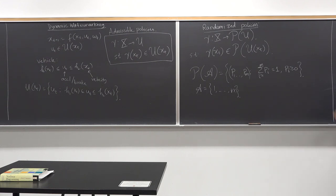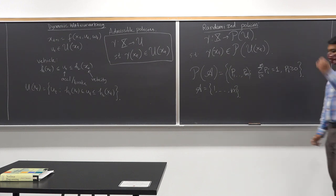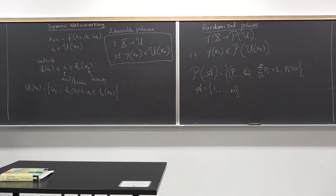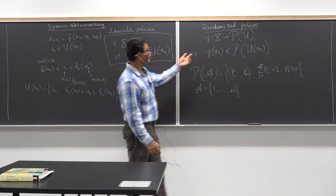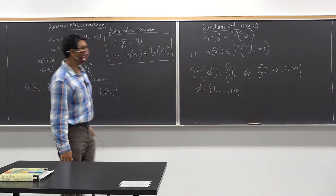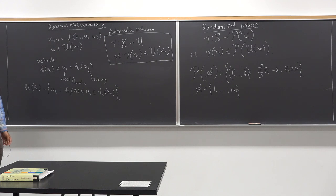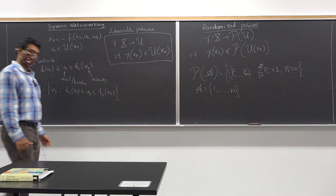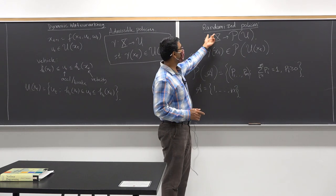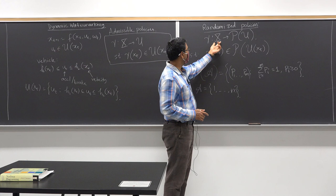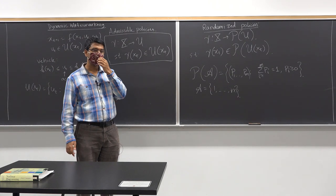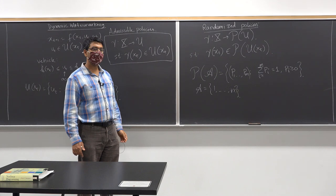Is the notion of randomized policies clear? Any questions so far? How would you implement a randomized policy? The way you define the policy is: you get a state and then you have a distribution over all the actions you can possibly take at that instant. How would you implement taking such an action?